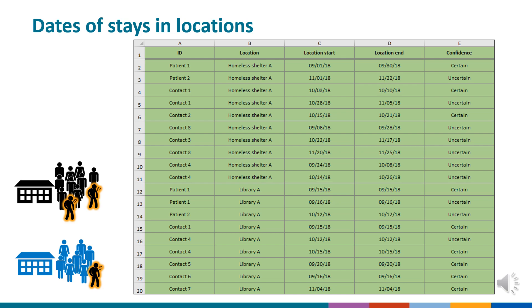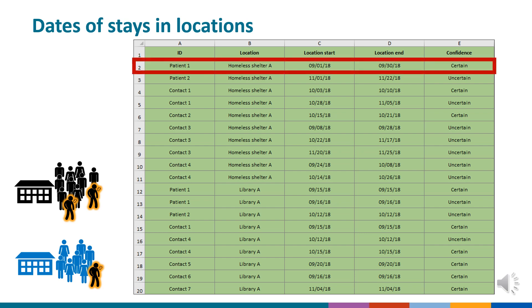To use LATTE, investigators should have data on dates of stays in locations for patients and potential contacts. These data can be obtained from sources such as employee time cards at workplaces, enrollment rosters for school courses, client logs for homeless shelters, and inmate manifests for correctional facilities. This screenshot shows hypothetical data entered into a LATTE data upload template available from CDC and ready for a LATTE analysis. Each row includes the start and end date for a stay of a particular person at a particular location.